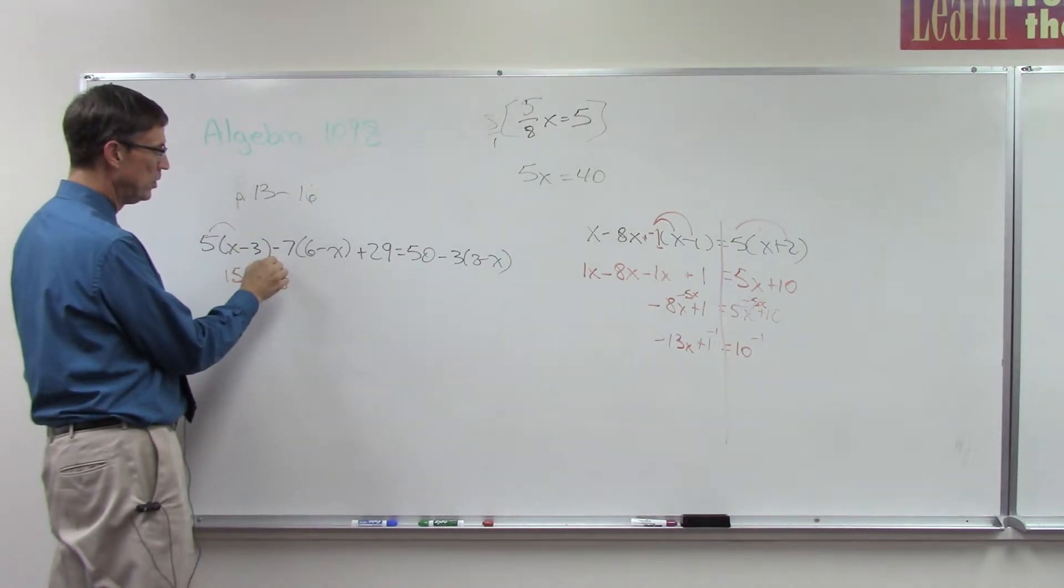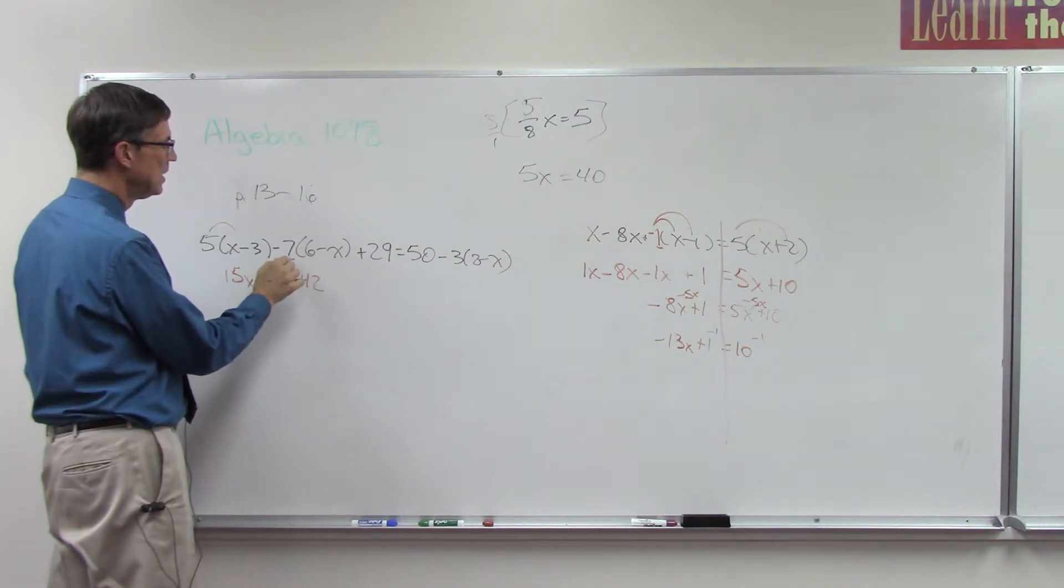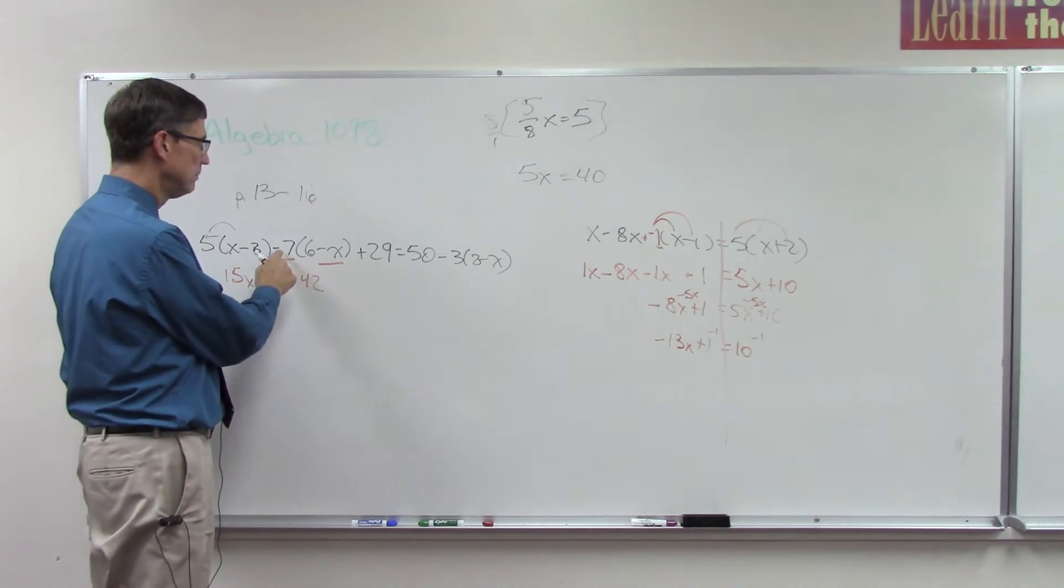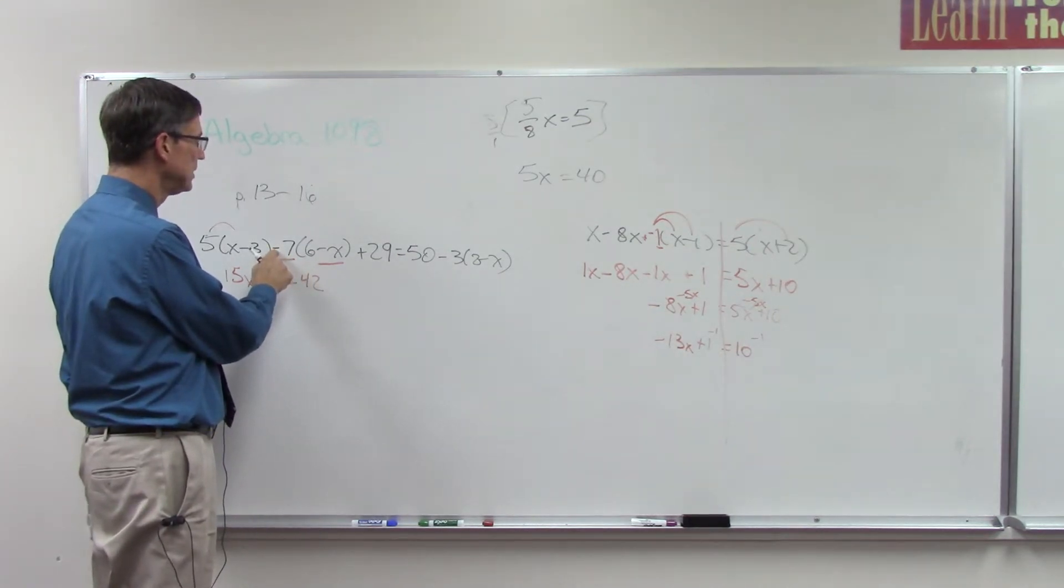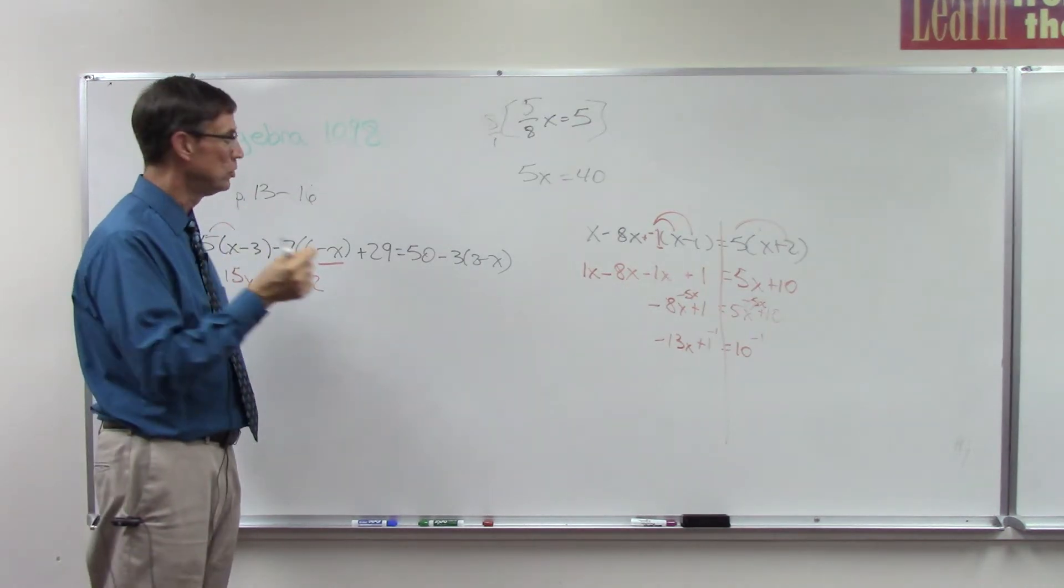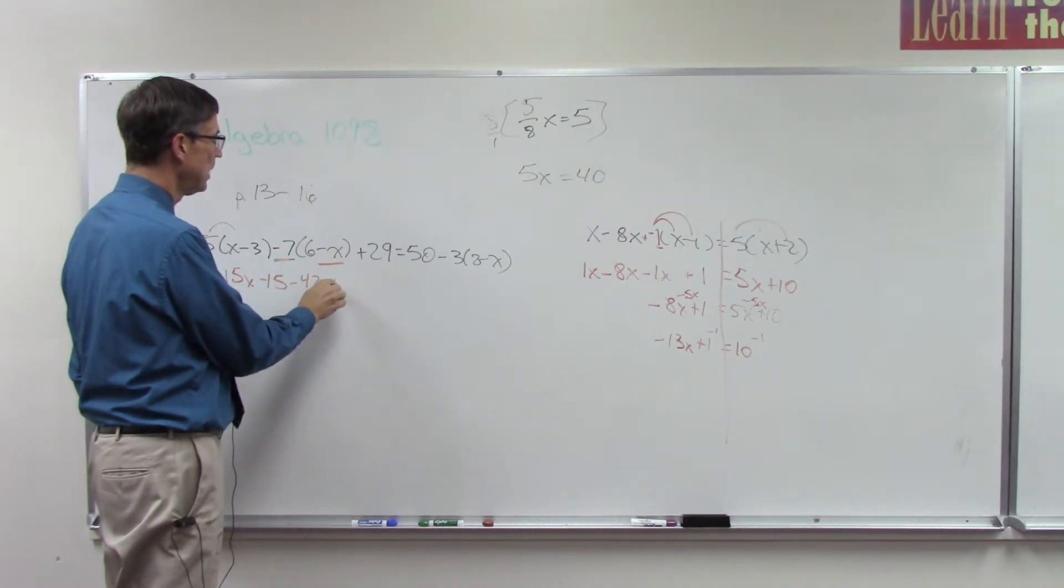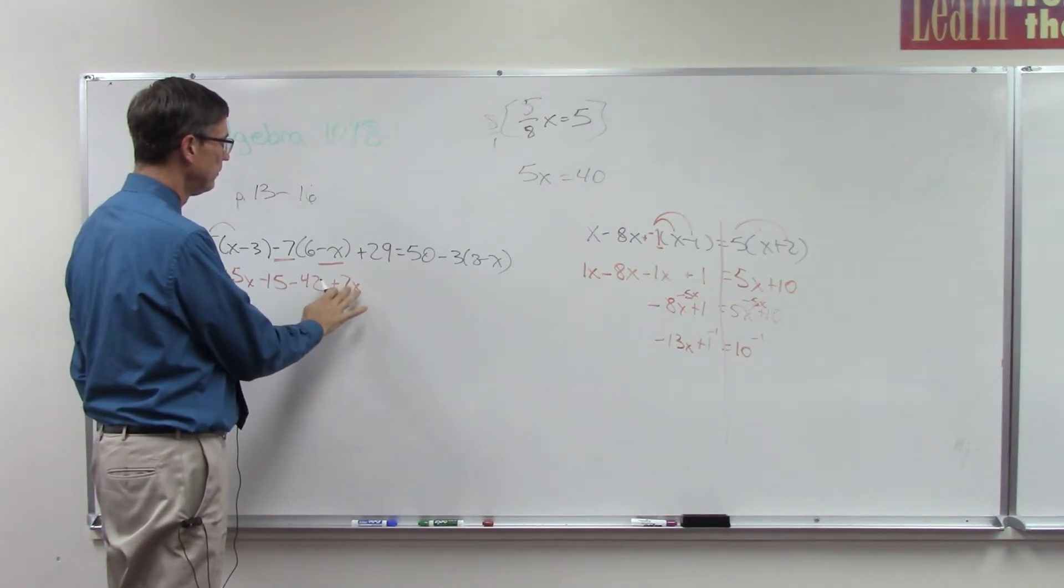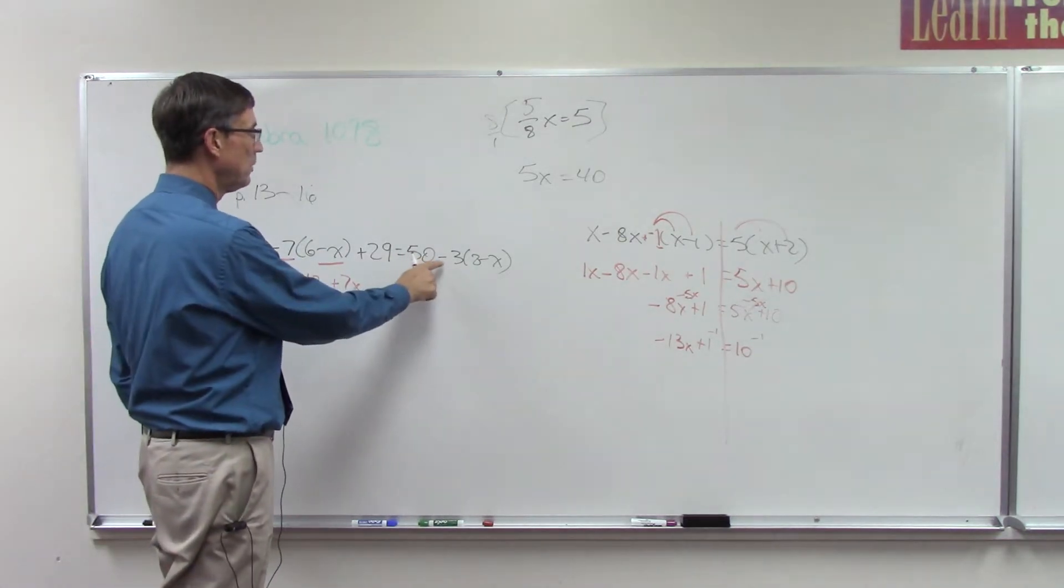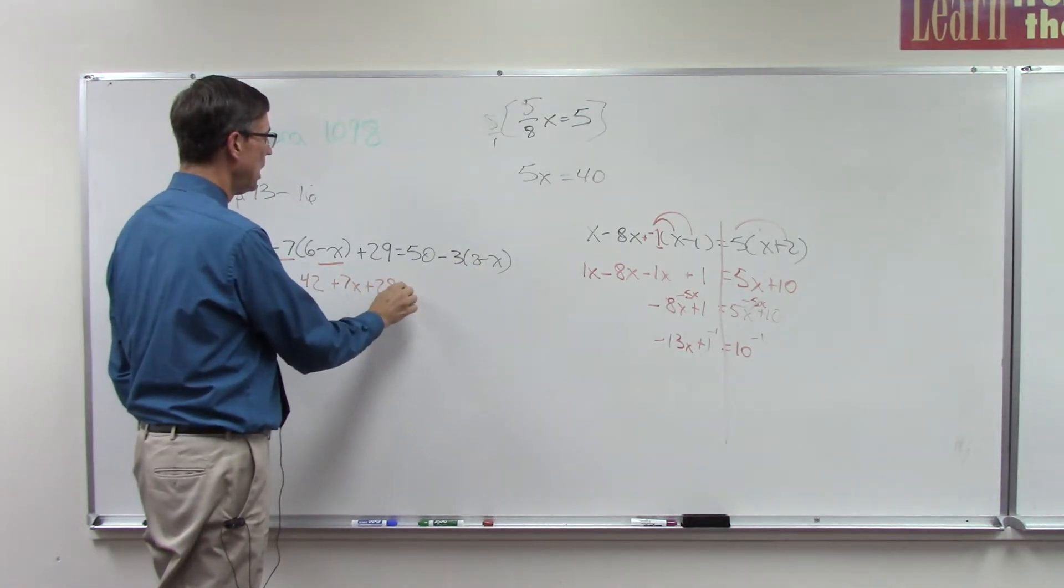I'm going to start here by distributing 5x minus 15. Now be careful here. Notice I have negative 7 times x. So it gives me negative 42, negative 7 times negative x. Again, don't ignore the fact that this sign goes with the 7. If you still want to write it as plus a negative 7, you can do that. But it's negative 7 times negative x. Negative times negative is positive. That's one of the most common mistakes that students make in doing this kind of problem. We're going to see it again over here.